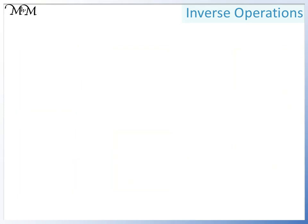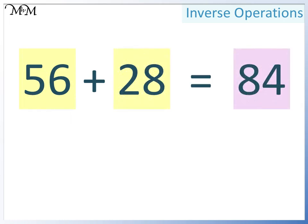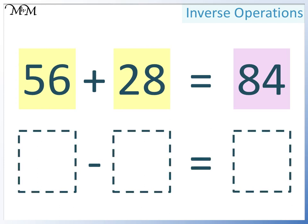Here's another example. 56 plus 28 equals 84. Two smaller numbers add together to make a larger number. We want to change this into a subtraction. The numbers look a little trickier to calculate mentally, but we have been told the addition calculation, so we don't need to calculate anything.